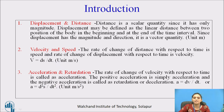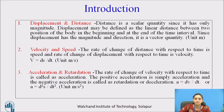Acceleration and retardation. The rate of change of velocity with respect to time is called acceleration. The positive acceleration is simply acceleration and the negative acceleration is called retardation. Acceleration is dv by dt and the unit is meter per second square.